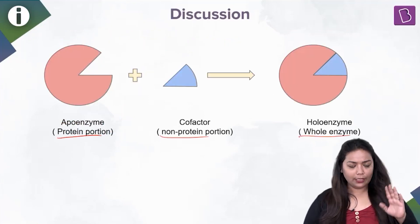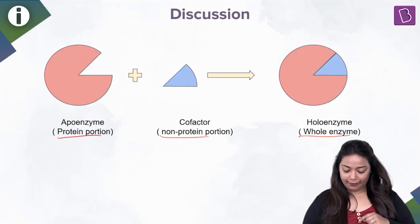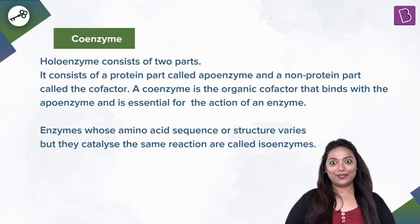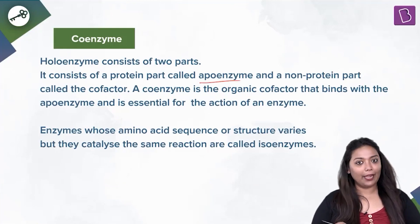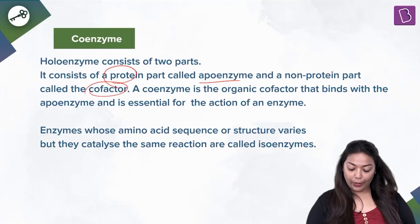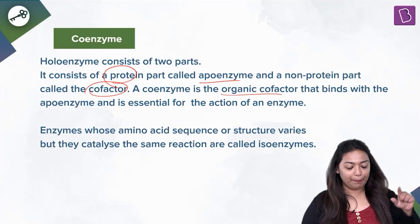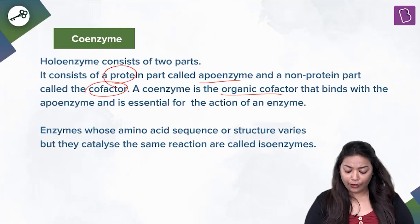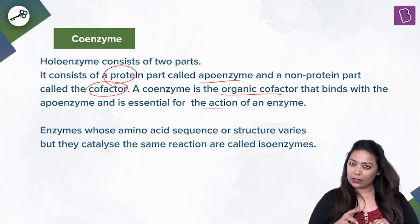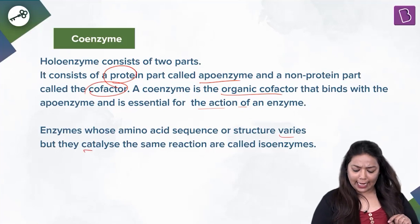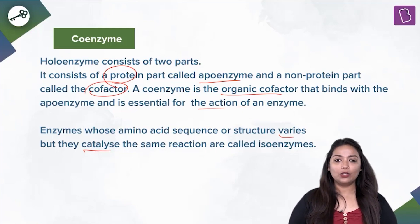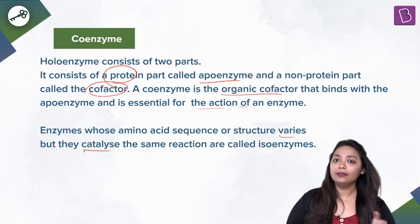To put it in words: the holoenzyme has two parts — the apoenzyme, which is the protein part, and the cofactor, which is the non-protein part. A coenzyme is the organic cofactor that binds to the apoenzyme and is essential for the reaction of an enzyme. Enzymes whose amino acid sequence or structures vary but catalyze the same reaction are called isoenzymes — what they are made of may differ, but what they do is similar.